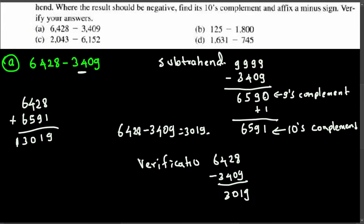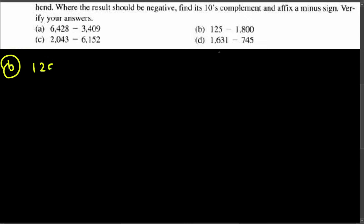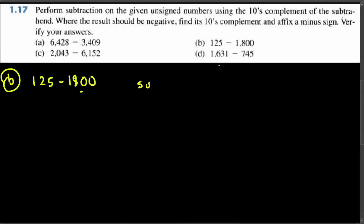That's the A part. Now let's look at part B. In part B, we have 125 minus 1800. This is the subtraction here, so we take the subtrahend, which is 1800.